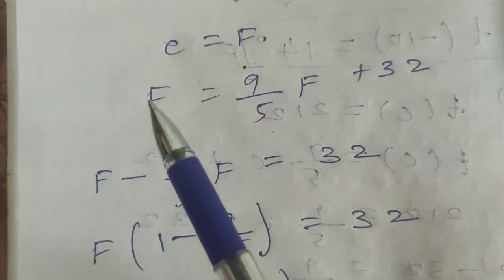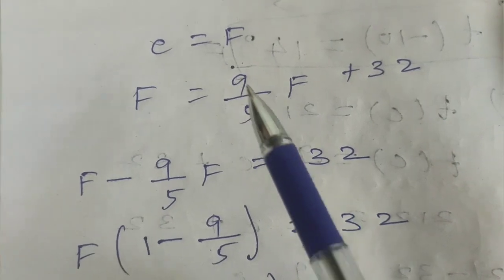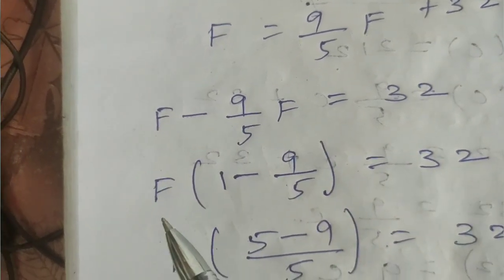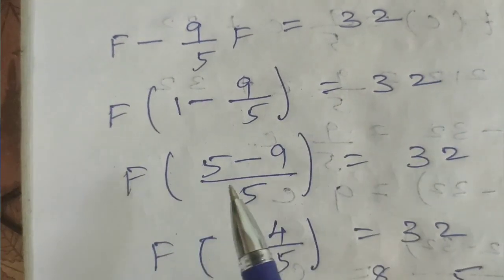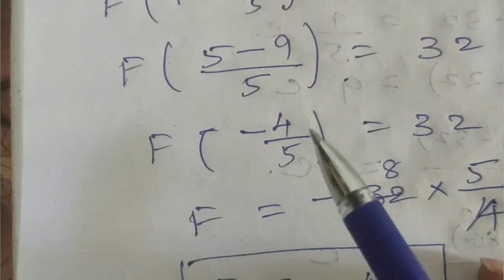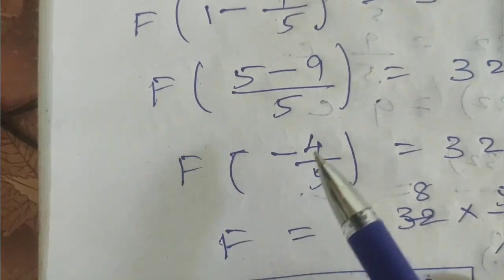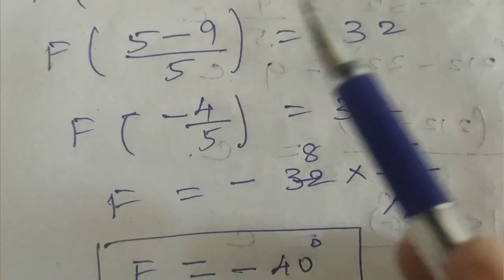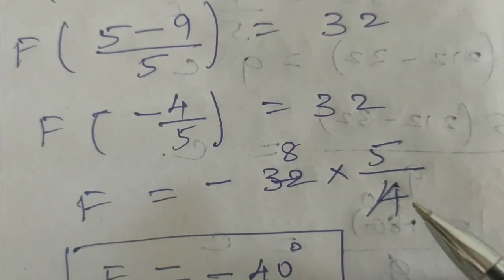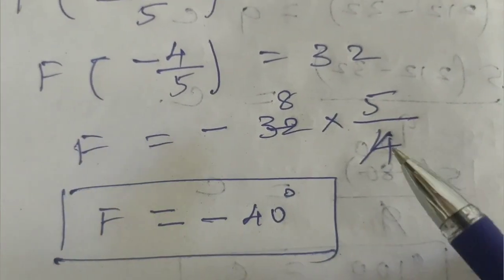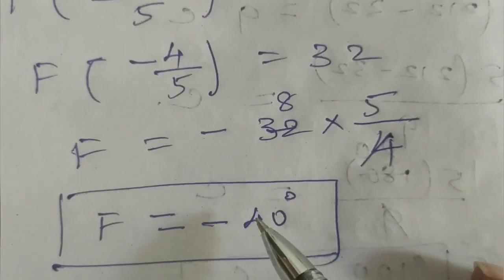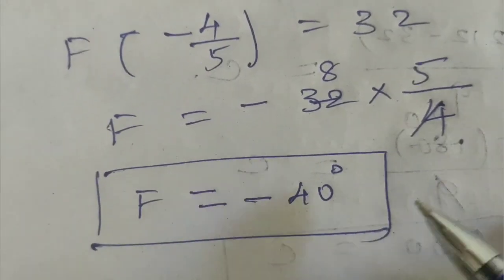We move the F terms together: F minus 9 by 5 times F equals 32. That gives 1 minus 9 by 5 times F equals 32. Taking 5 as common denominator, 5 minus 9 over 5 times F equals 32, so minus 4 by 5 times F equals 32. Multiplying both sides, F equals 32 times 5 divided by minus 4, which gives F equals minus 40 degrees.